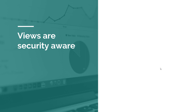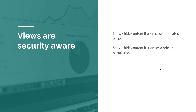There are tons of situations where you want to show or hide content based on whether the user is authenticated or not. There are cases when you want to show or hide content based on a particular role or permission. And of course there are always cases when you need to display user details like username, email, permissions, and so on — and you can only get those from Spring Security, so you need the security context available at the view level.